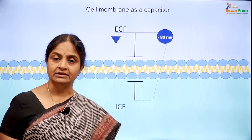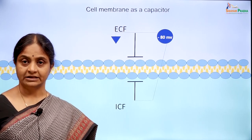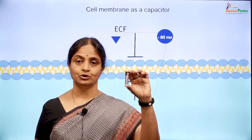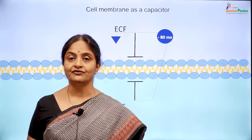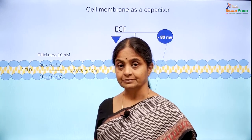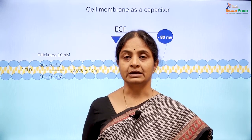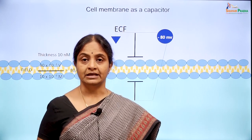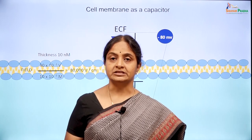This is a huge voltage. To understand the enormity of the field that the membrane exists in, let us calculate the field — that is the voltage per centimeter if we extrapolate. For example, this AA sized battery is a 1.5 volt battery and the distance across the two ends is 4 centimeters, giving a field of about 0.4 volts per centimeter. In comparison, the field that the cell membrane is subjected to is 80,000 volts per centimeter. If the membrane can exist without breaking down in this huge electrical field, then the dielectric constant of the membrane must be very high — the lipids of the cell membrane are such good insulators.